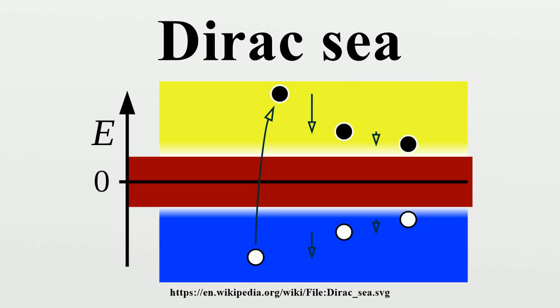Dirac's solution to this was to turn to the Pauli exclusion principle. Electrons are fermions and obey the exclusion principle, which means that no two electrons can share a single energy state within an atom. Dirac hypothesized that what we think of as the vacuum is actually the state in which all the negative energy states are filled, and none of the positive energy states.